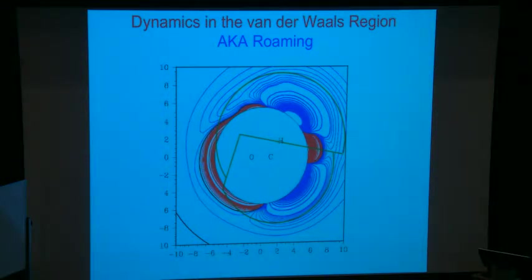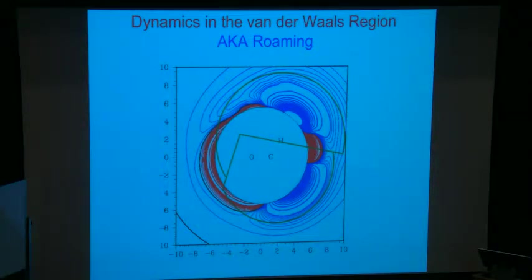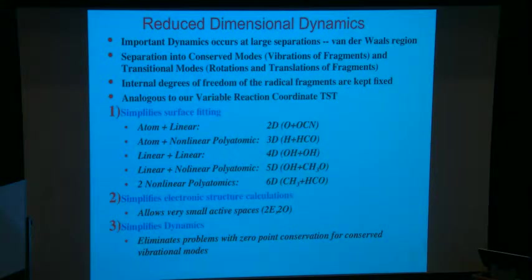The second approach is to simply run trajectories. You start trajectories at the inner transition state — that gives you the rate to get out to the roaming region. Once you calculate that rate, you need a branching fraction: do things go out to separated fragments, go over to the abstraction path, or come back? You start a statistical ensemble of trajectories there and calculate those branching ratios. That should be accurate within the limitations of classical mechanics, which should be very good because these are low-frequency motions.